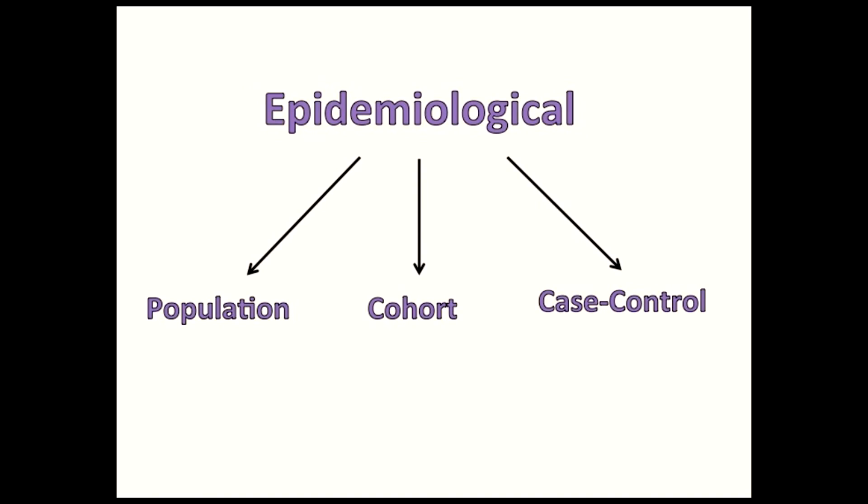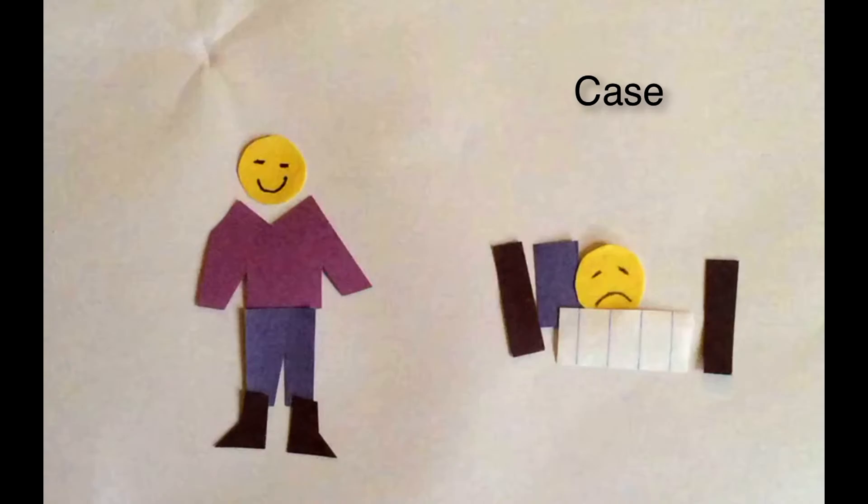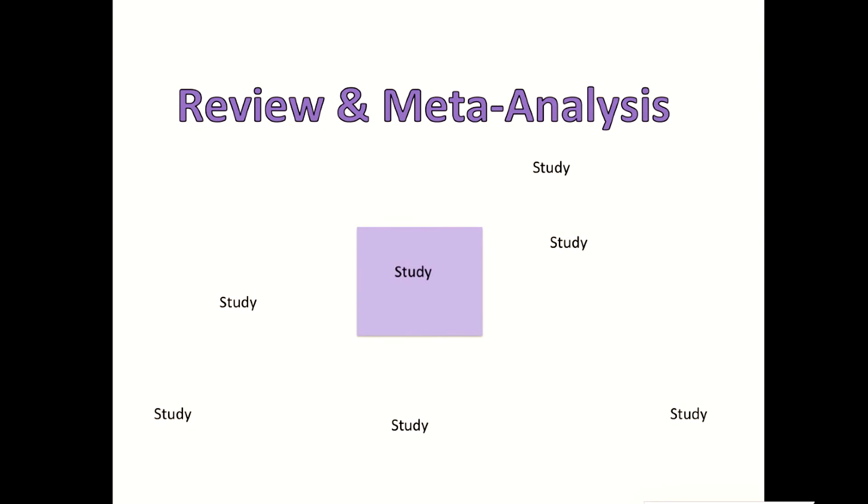The third type of epidemiological study is called a case control study. The cases are people with a disease, and the control includes people without the disease. But the cases and the controls are matched in other characteristics. The last category is called a review or meta-analysis.